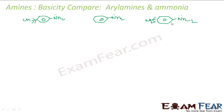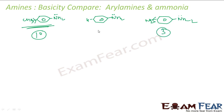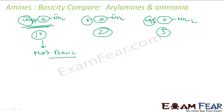Benzene is common to all, so ignore that. The differences are: hydrogen does nothing, CH3 releases electrons to nitrogen making it more basic, and NO2 withdraws electrons from nitrogen making it least basic. So the order is: p-methylaniline is most basic, aniline is in the middle, and p-nitroaniline is least basic.